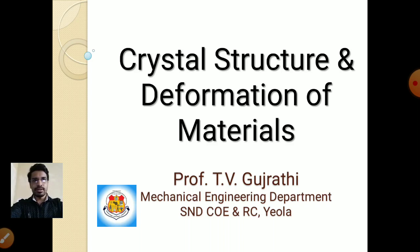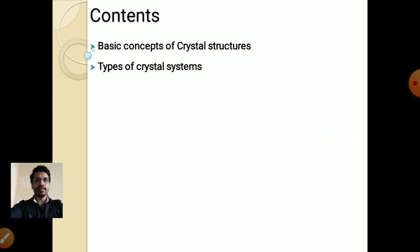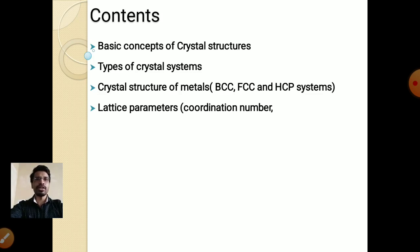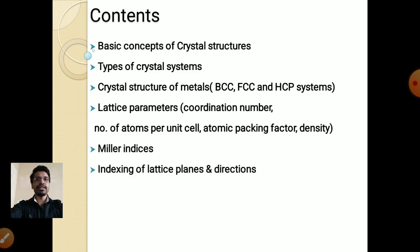Let's see the contents of this topic. First is basic concepts of crystal structure, then types of crystal systems, then crystal structure of metals — that is BCC, FCC, and HCP systems — then lattice parameters. In that we are going to study coordination number, number of atoms per unit cell, atomic packing factor, and density. Then we are going to study Miller indices and indexing of lattice planes and directions.